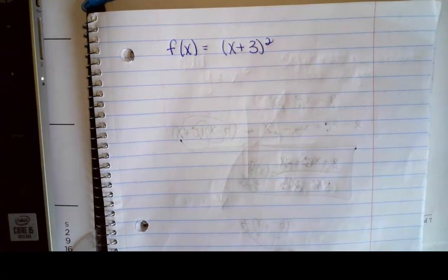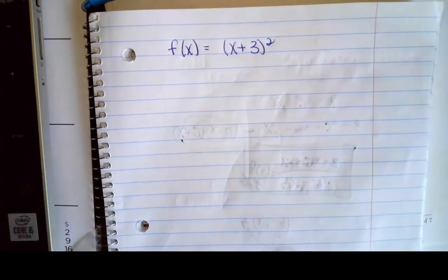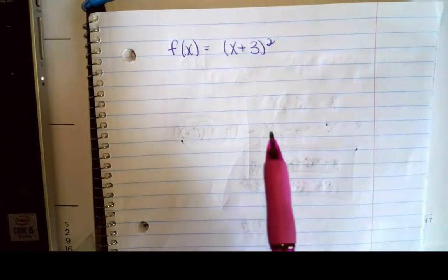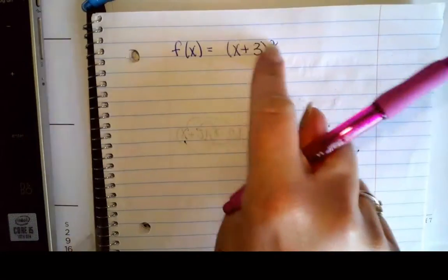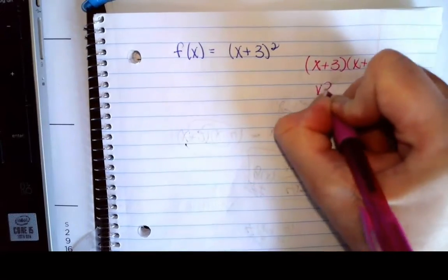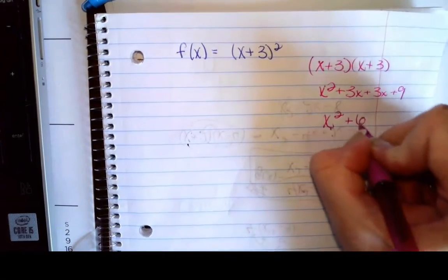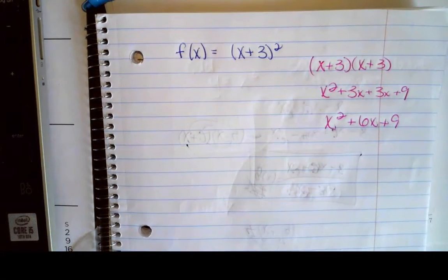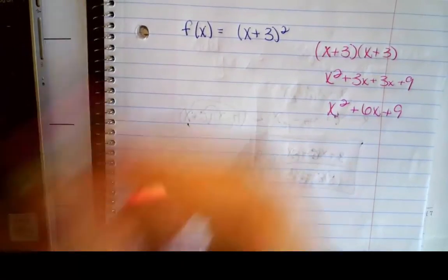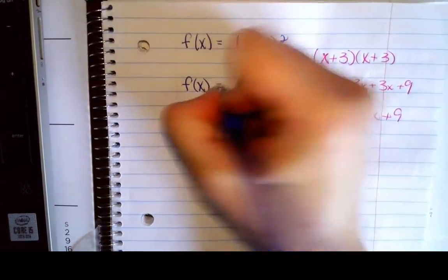Let's look at this next example. I want to know: is this even, odd, or neither? I'm going to foil it out to see what's happening. This is the same as x plus 3 times x plus 3, which gives me x squared plus 3x plus 3x plus 9, and when I combine like terms I get x squared plus 6x plus 9. That's the function as it stands.